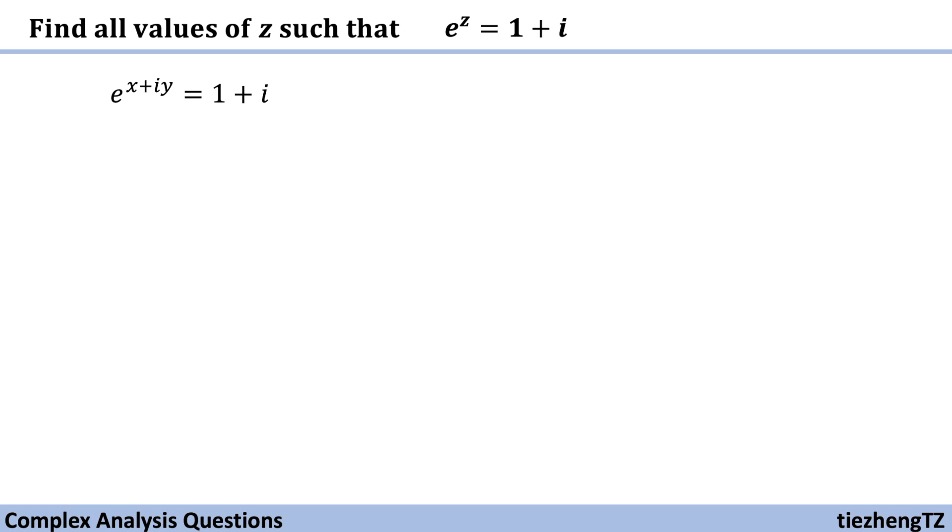And then we can rewrite e to the power of x times e to the power of iy. And the right part of the equation we can change that to square root 2 times half square root 2 plus half square root 2 times i.